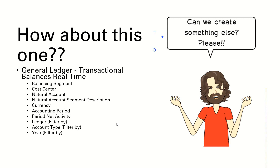The analysis will have the following information: Balancing Segment, Cost Center, Account, Period Name, Period Activity, and maybe Currency. We will be using a few filters like Ledger, Account Type, Currency, Year, etc.